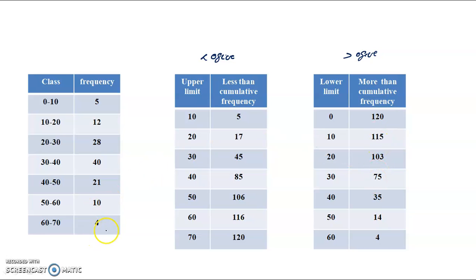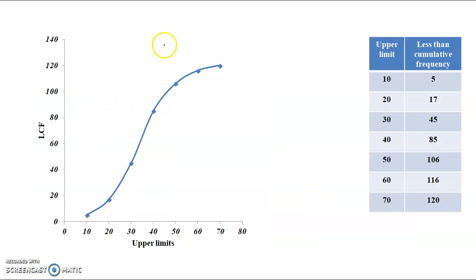For less than cumulative frequency, we also work step by step: 4, then 4 plus 10 equals 14, then 14 plus 21, and so on. This is the less than cumulative frequency, and it uses the upper limits of the classes.